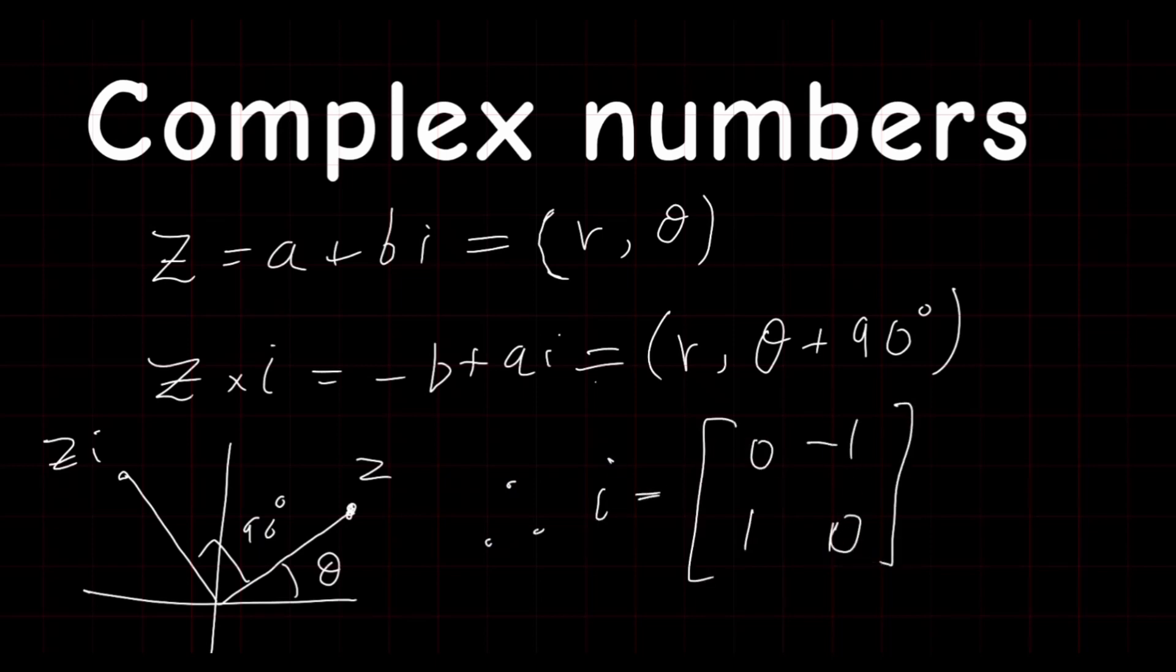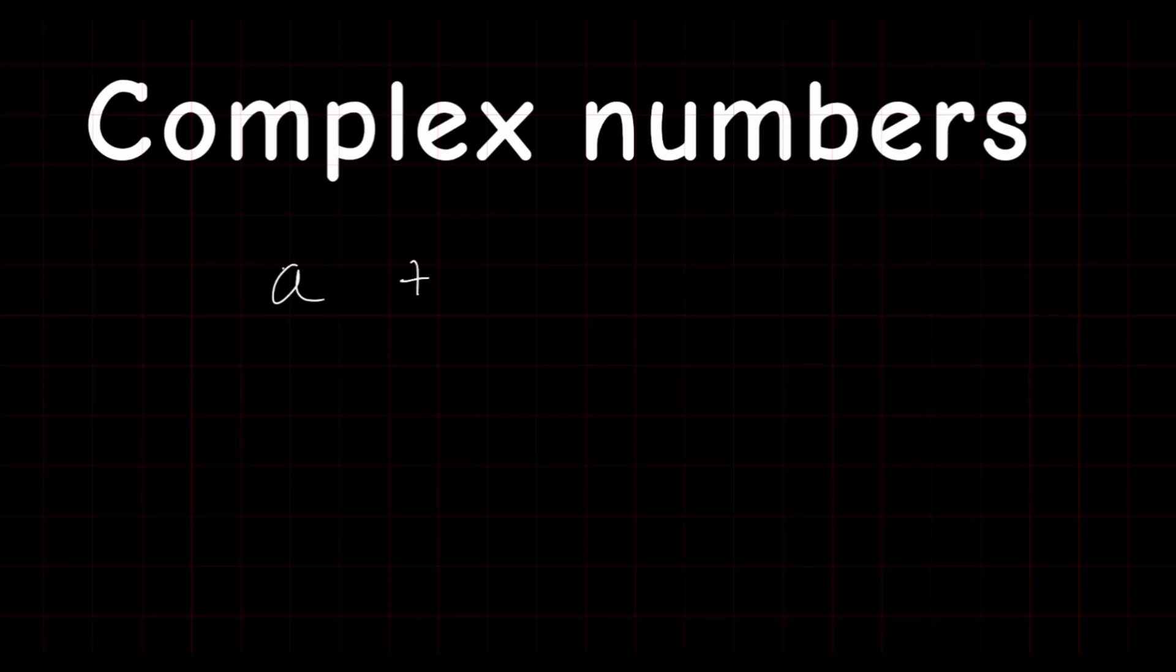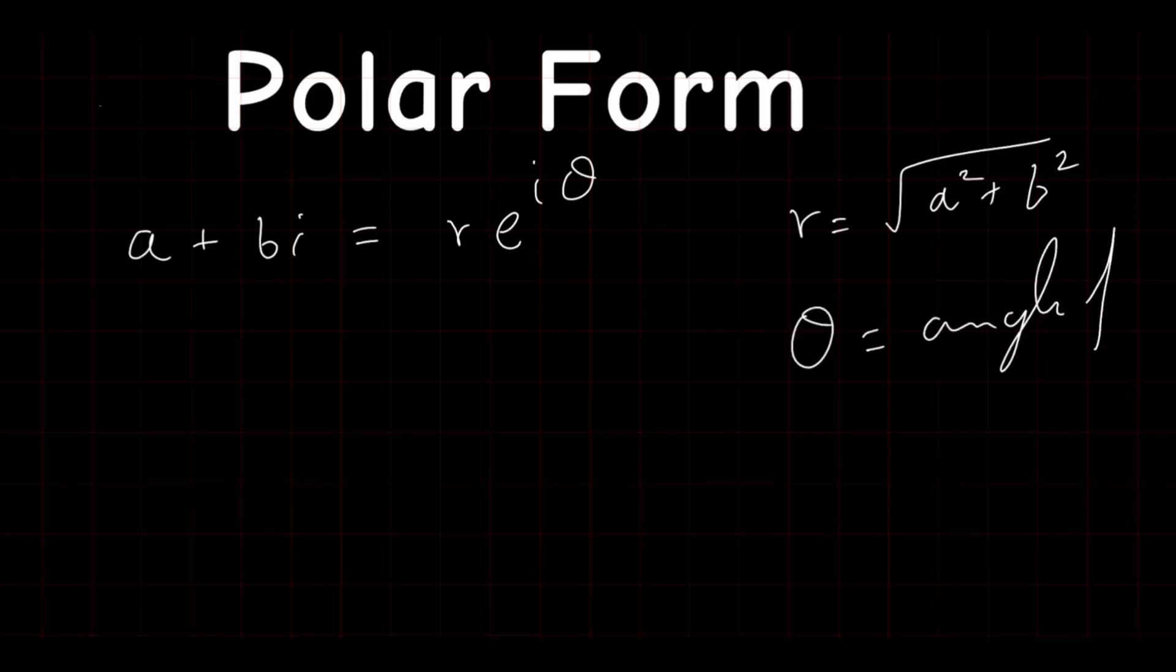Now, looking back at the complex form A plus BI, we can write 1 as an identity matrix and i as the previous matrix. Now if we simplify that, we get [A, -B; B, A] and this precisely is the representation of a complex point. Our result that we got from the rotation and scaling matrix can also be verified by its polar representation of a complex number, which is r times e to the i theta, where theta is the angle from the x-axis and r is the magnitude.